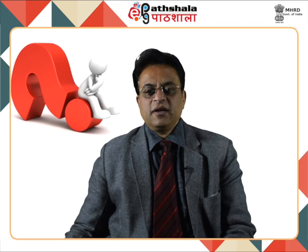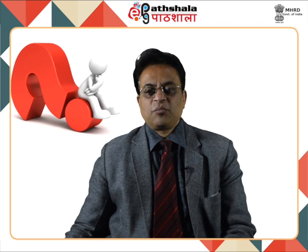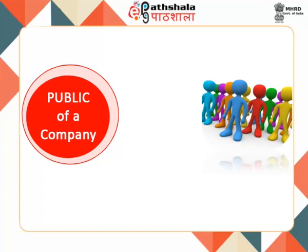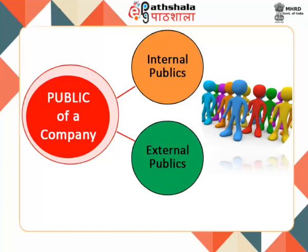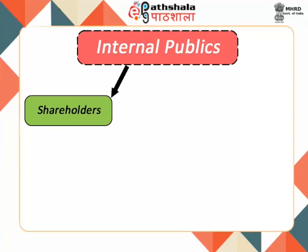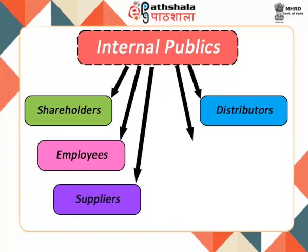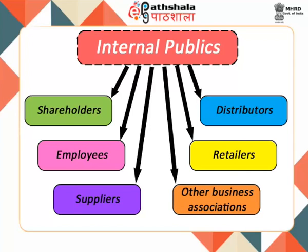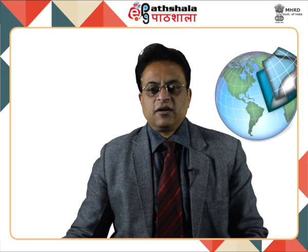Each public of a firm shares an exclusive two-way relationship with the company, and by effectively understanding and managing this relationship, there can be a mutually beneficial relationship for both. The publics of a company are divided into two categories: internal publics and external publics. Internal publics include shareholders or investors, employees, suppliers, distributors, retailers, dealers, and other business associations such as promoters, management consultants, lawyers, solicitors, auditors, friends and family members of directors, and company advisors.